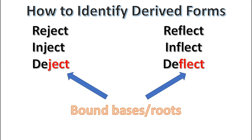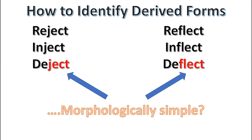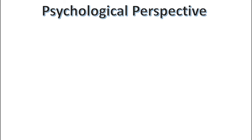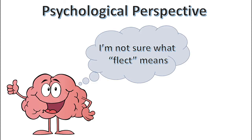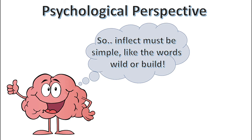However, there's another way of thinking about this where these words would be considered morphologically simple — from a psychological perspective. If we think of morphology as a description of what our minds do when we make and understand language, then whether words like 'reflect,' 'inflect,' and 'deflect' are morphologically complex depends on the knowledge the language user has. If you don't know that 'flect' is derived from the Latin 'flectere,' then you'll process these words much more similarly to morphologically simple words. It's worth considering these perspectives because, after all, language does begin and end in our mind.